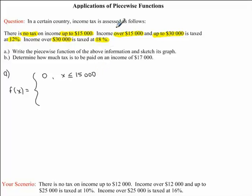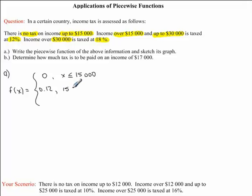Now let's look at our second interval. We have income between $15,000 and $30,000, and this is taxed at 12%. So f of x is equal to 0.12, writing our percent as a decimal. For our interval, we are over $15,000, which means $15,000 is less than x — not equal to, because it's only over $15,000. And we have up to $30,000, meaning x must be less than or equal to $30,000.